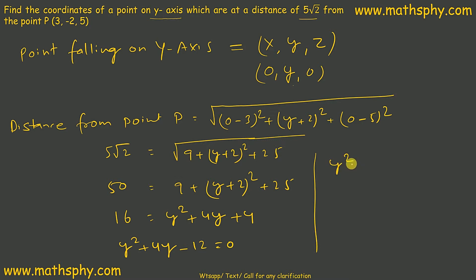This can be y square plus 6y minus 2y minus 12 equals to 0. So y goes common, so y plus 6 minus 2 goes common, y plus 6 equals to 0.